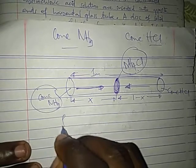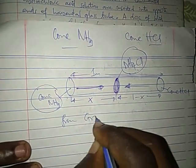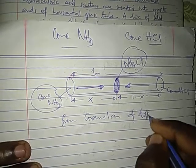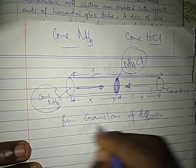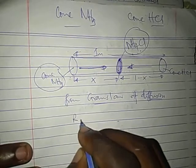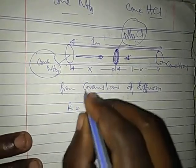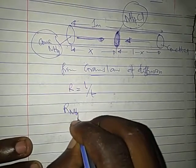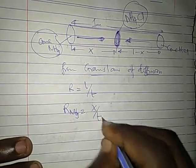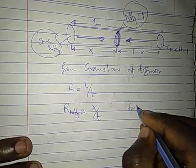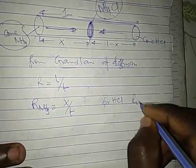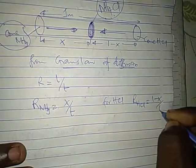Then from Graham's law, from Graham's law of diffusion, rate is equal to distance or length divided by time. Now for ammonia, rate of NH3 will be equal to x divided by time. Then for hydrogen chloride, rate of HCl is equal to 1 minus x divided by time.